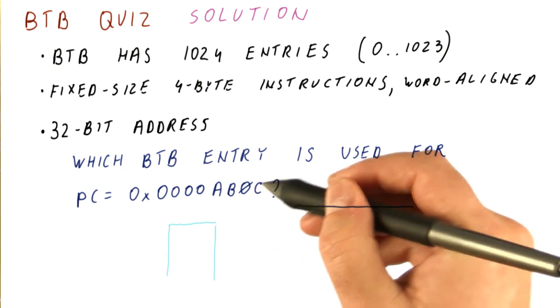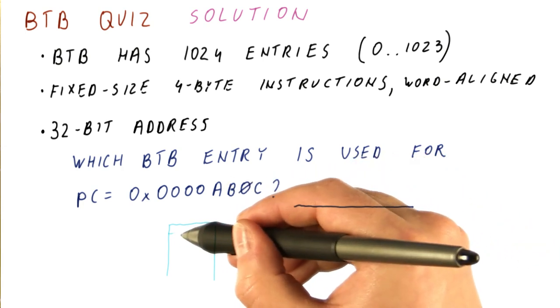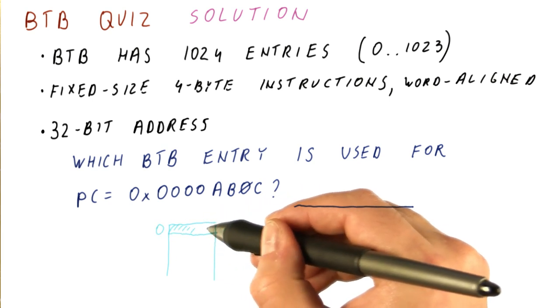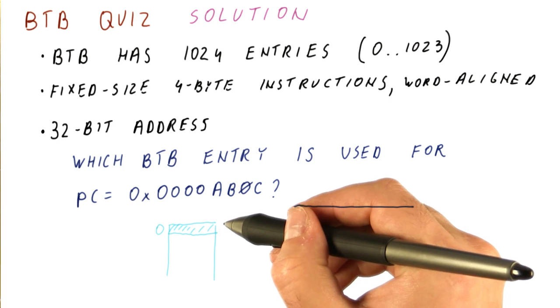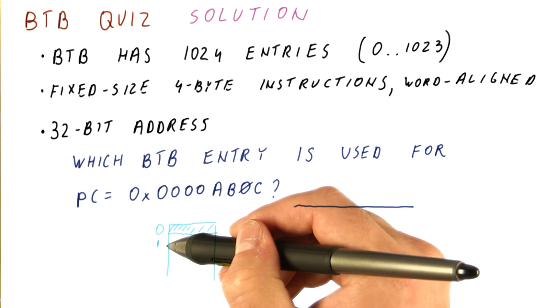If you now look at what would happen if we use the least significant 10 bits to index into the BTB, we would see that entry number zero would be used. An instruction can have the least significant 10 bits be all zero. Entry number one, however,